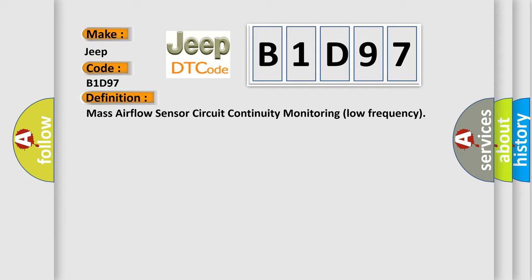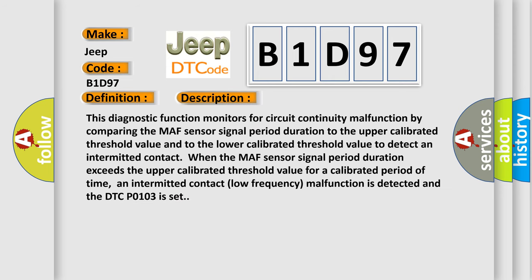And now this is a short description of this DTC code. This diagnostic function monitors the circuit continuity malfunction by comparing the MAF sensor signal period duration to the upper calibrated threshold value and to the lower calibrated threshold value to detect an intermittent contact when the MAF sensor signal period duration exceeds the upper calibrated threshold value for a calibrated period of time.